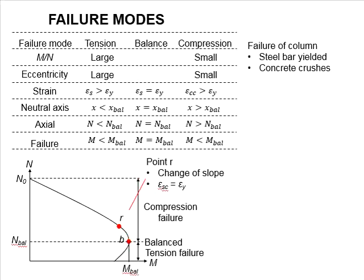Failure modes of columns. A typical column can be subjected to moment and axial load. When the axial load is relatively high, exceeding the capacity of the column, compression failure can occur. When a column is subjected to high bending moment, which results in tension in the column sections, tension failure can occur.